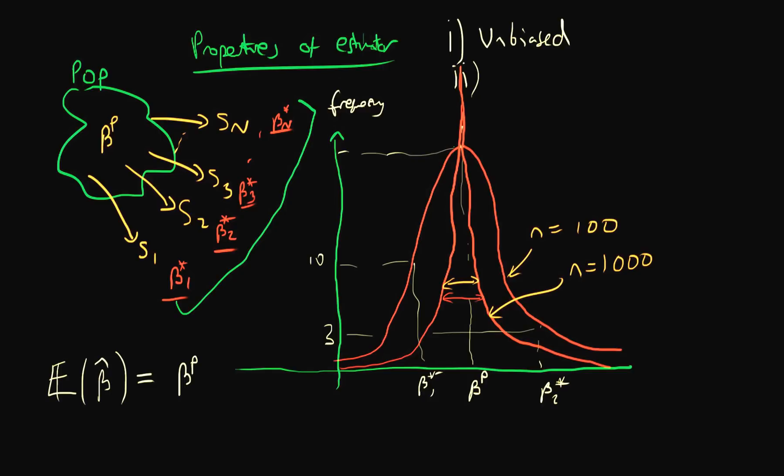In fact, as we increase our sample size arbitrarily, we would hope that we wouldn't get a distribution, we would just get a line at beta p. So this property, mathematically, means that as our sample size tends to infinity, our estimator tends in value to the true population parameter. So this is a property which we call consistency of estimators.